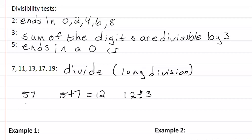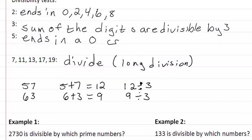If we have a number like say 63, 6 plus 3 is equal to 9 and 9 divides by 3, so 63 is divisible by 3. Makes it really easy once you know.